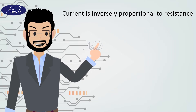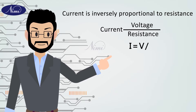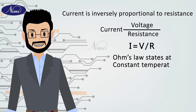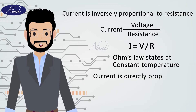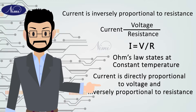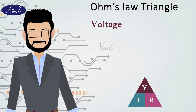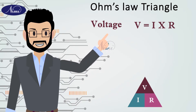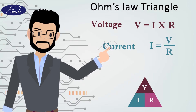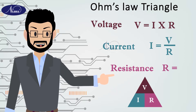Altogether, current equals voltage divided by resistance — I is equal to V by R. Ohm's law states that at constant temperature, current is directly proportional to the voltage and inversely proportional to the resistance. From the Ohm's law triangle, voltage can be obtained using the formula V = I × R, current using I = V / R, and resistance using R = V / I.